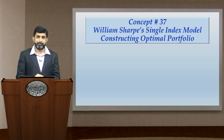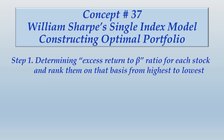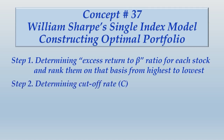The optimal portfolio construction procedure starts with Step 1: determining the excess return to beta ratio for each stock and ranking them from highest to lowest. We will first compute the excess return to beta ratio - that is excess return divided by beta. All stocks will be ranked on the basis of this ratio from highest to lowest. The stock with the highest excess return to beta ratio gets rank 1 and the lowest gets the last rank.